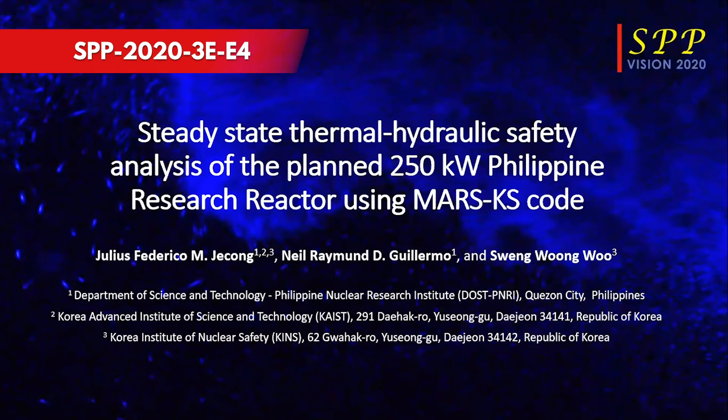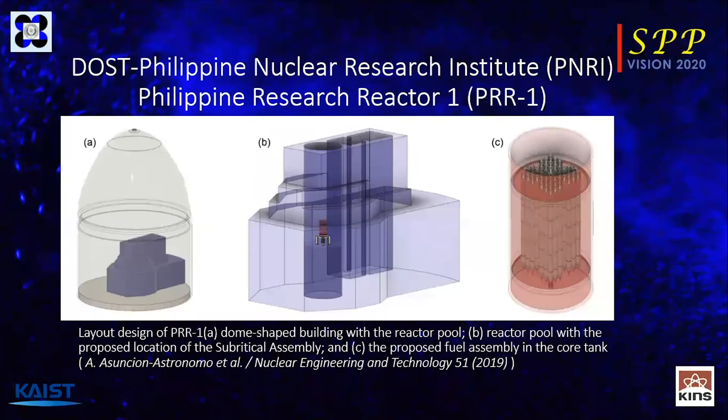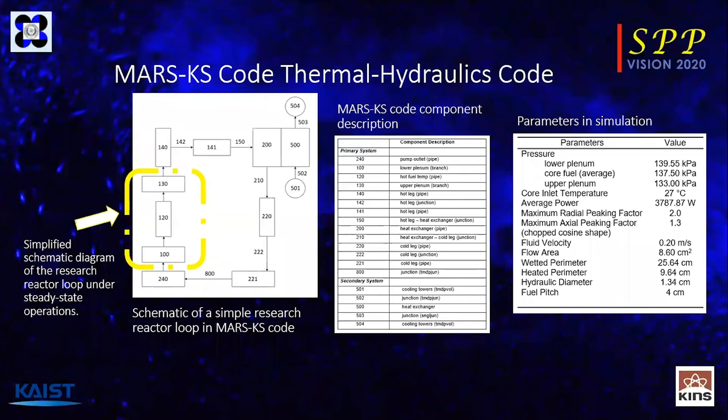Steady-state thermal hydraulic safety analysis of the plant's 250-kilowatt TRIGA research reactor using the MARS-KS code. The DOST-PNRI is implementing a project to use the PRR-1 TRIGA nuclear fuel as a critical reactor for training, education, and research. However, although a subcritical reactor is a valuable training and research facility, it offers limited industrial applications. To potentially reap more benefits, PNRI is also investigating the feasibility of converting the zero-power reactor to a low-power reactor in the future. In this work, the thermal hydraulics behavior of a 250-kilowatt low-power configuration of the PRR-1 TRIGA reactor is investigated using the MARS-KS code.